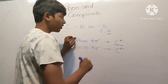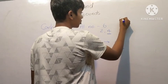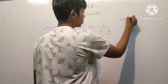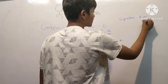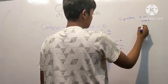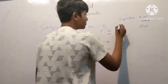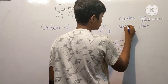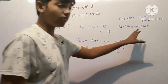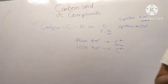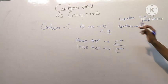First, gaining 4 electrons: carbon has 6 protons and 6 electrons. If it gains 4 more, it would have 10 electrons. That means 6 protons holding on to 10 electrons, which requires a lot of energy — very difficult for carbon. Hence, carbon cannot gain 4 electrons.